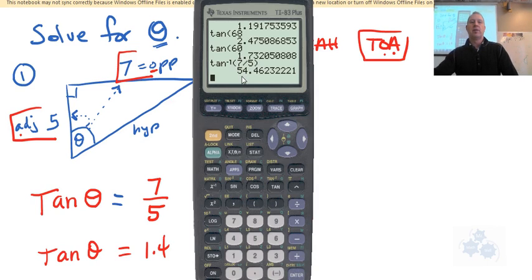That's what you're asking the calculator to do. And when you hit enter, look at this, 54 point, look at how exact it is. That's exactly the angle that will give you exactly 1.4. So let's test it out. Tan of 54.4623221. So if I use that exact decimal, look at this, I pretty much get 1.4. So that's how you get the calculator to do it.